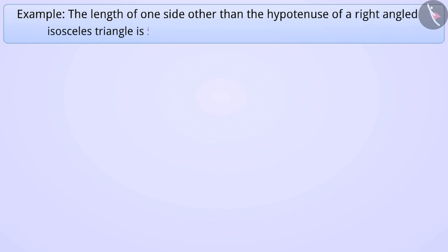The length of one side other than the hypotenuse of a right-angled isosceles triangle is 5.2cm. Construct a right-angled isosceles triangle.